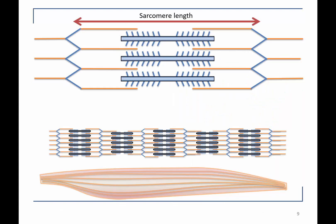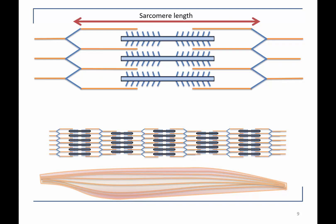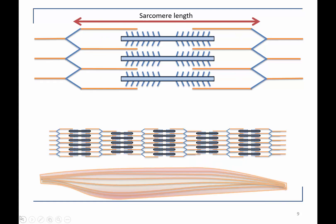This cartoon describes what happens during muscle contraction: you get shortening of the sarcomeres, which shorten the myofibrils, which shorten the muscles. When you contract, you shorten the myofibrils, which shorten the muscle. This is because the sarcomere gets shorter, the myofibrils get shorter, and the muscle gets shorter.